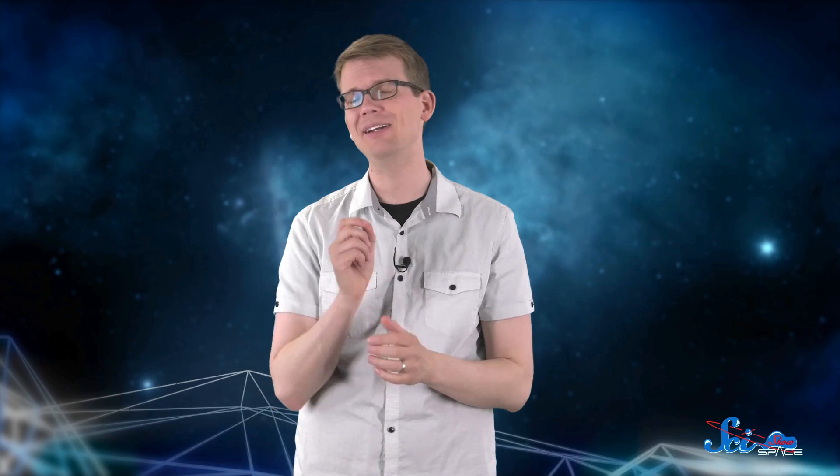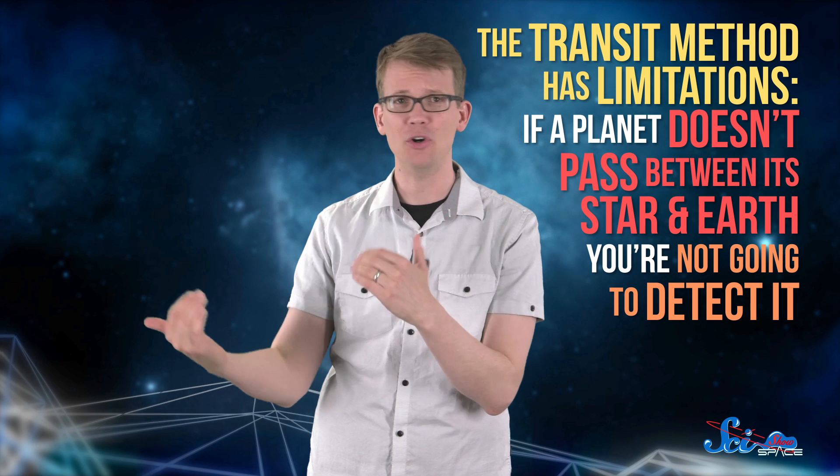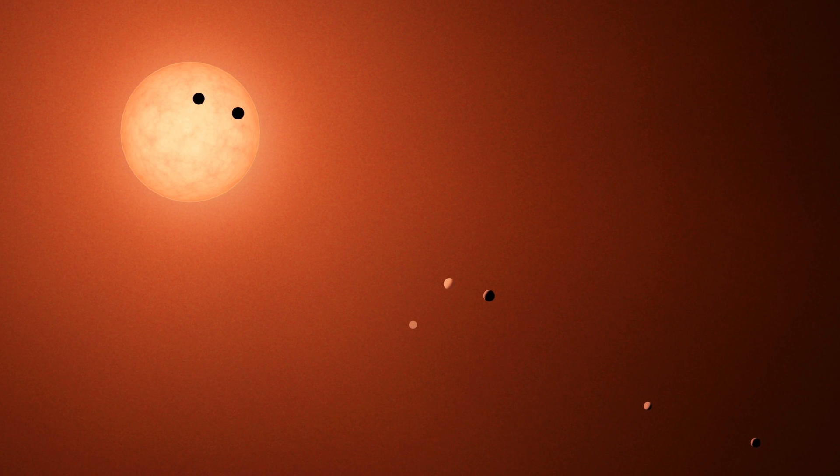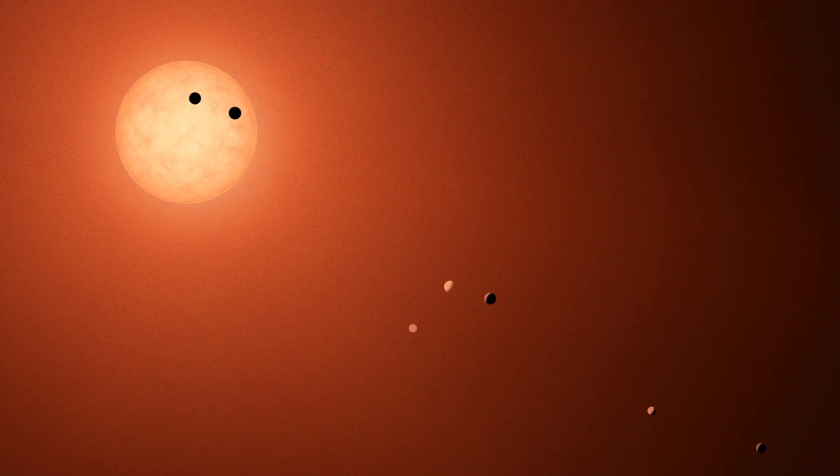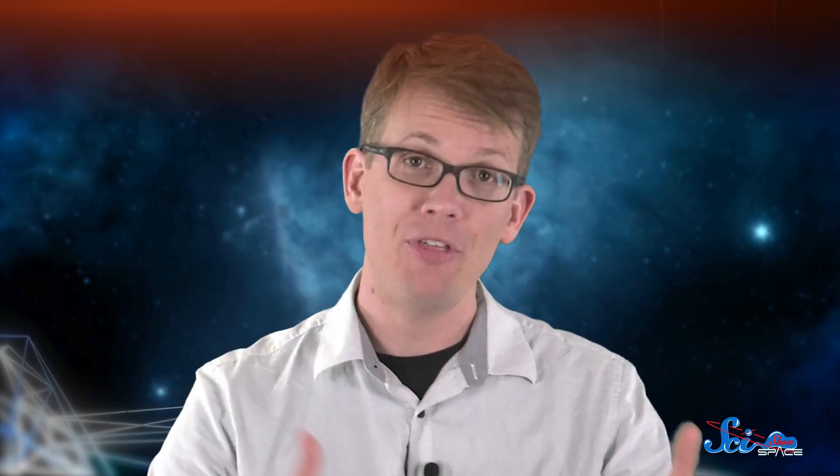So the transit method is a pretty successful way to find exoplanets, but it still has its limitations. Mainly, if a planet doesn't pass between its star and Earth, you're not going to detect it. For example, astronomers were able to find that system of seven Earth-sized planets around the star TRAPPIST-1 using the transit method, because the planets have relatively close orbits that just so happen to take them between their parent star and Earth. But if they weren't lined up so perfectly, we never would have detected them.